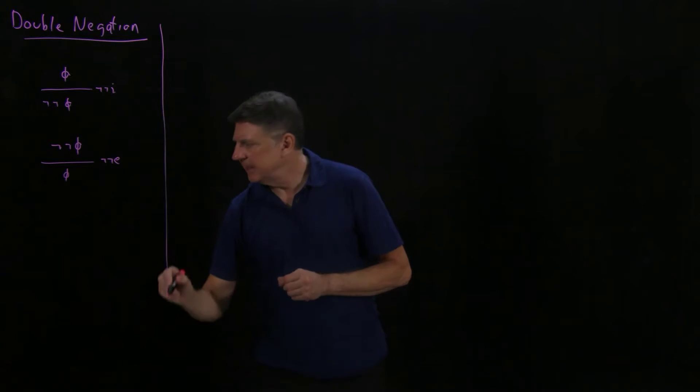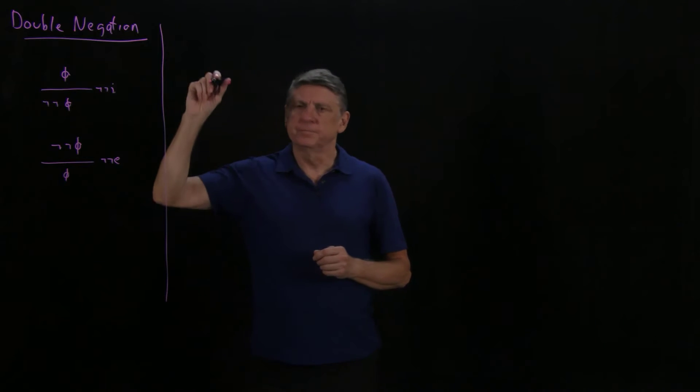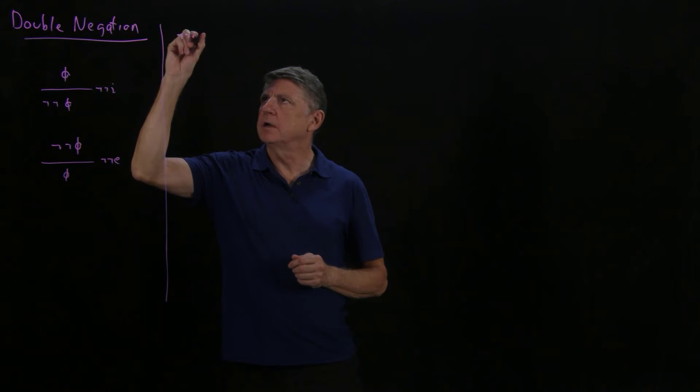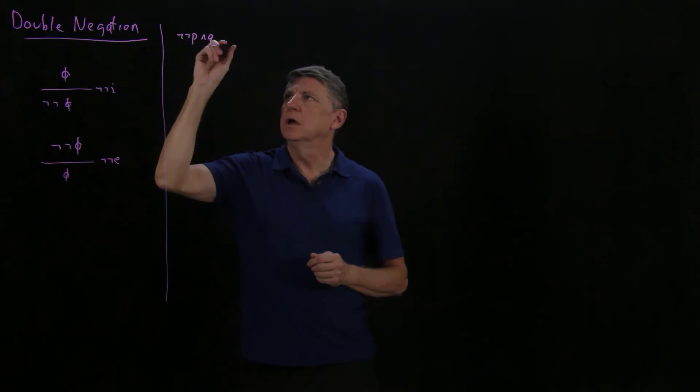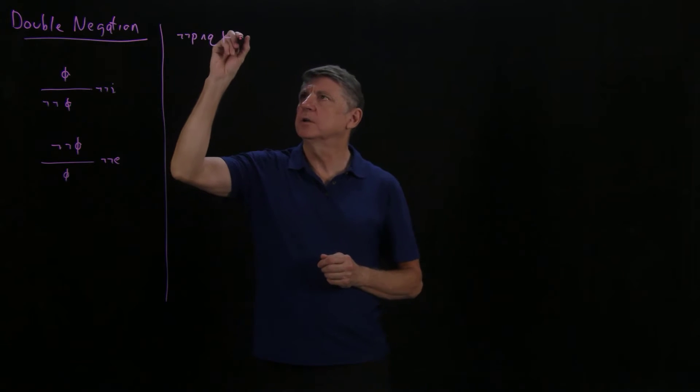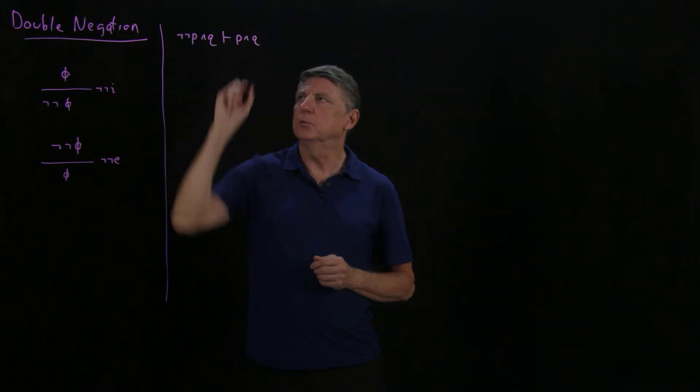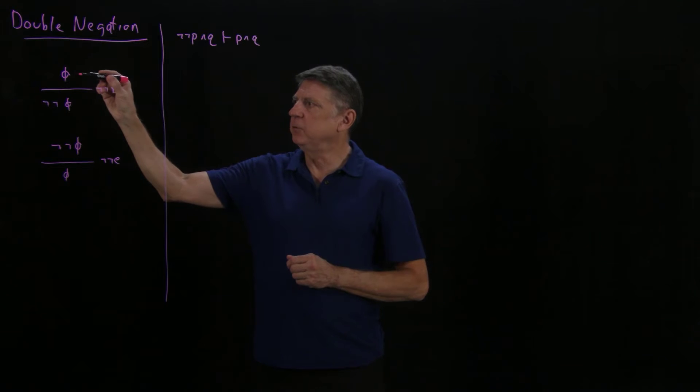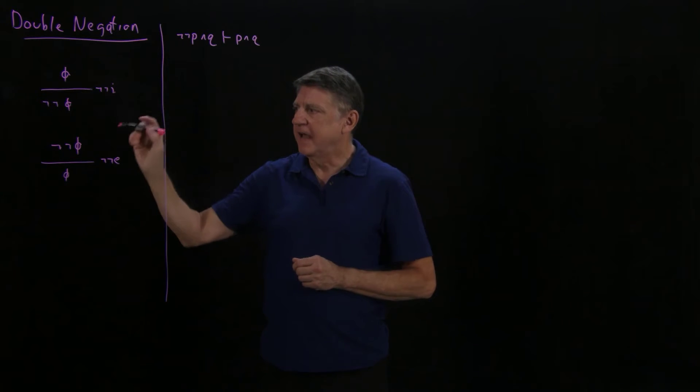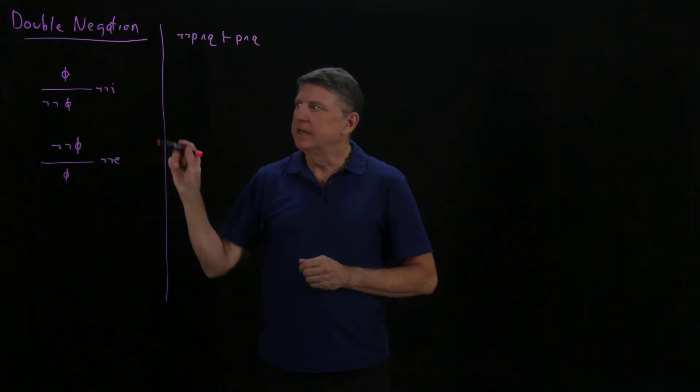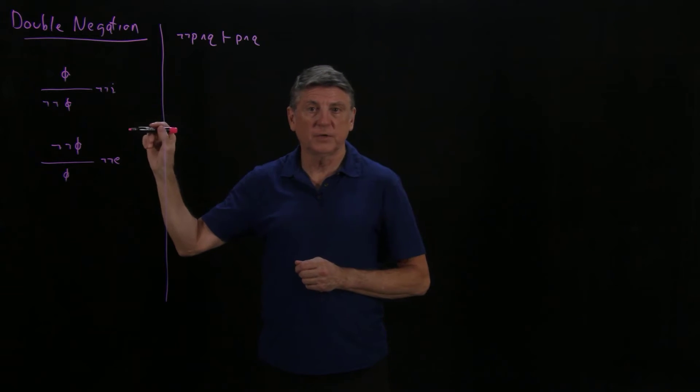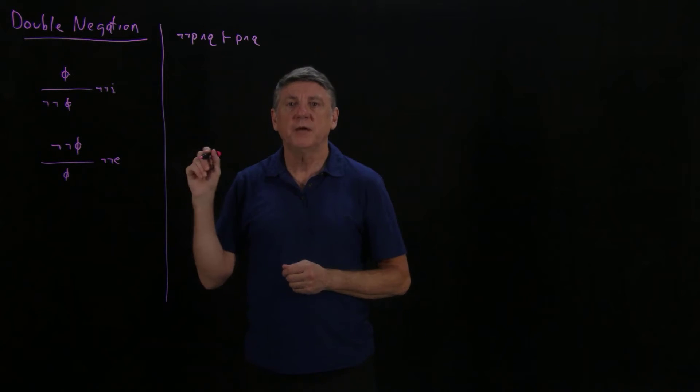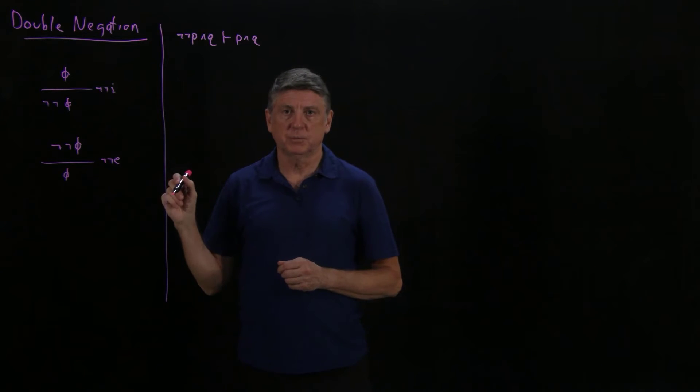Let's try to use these in a very simple proof. Suppose that we have not not p and q, and from that premise, we want to conclude p and q. We might think, well, if from phi we can deduce not not phi, and if from not not phi we can deduce phi, then surely we can just substitute wherever we need to. However, substitution is not a process that's permitted in natural deduction. What we have to do is break it down into its component parts.